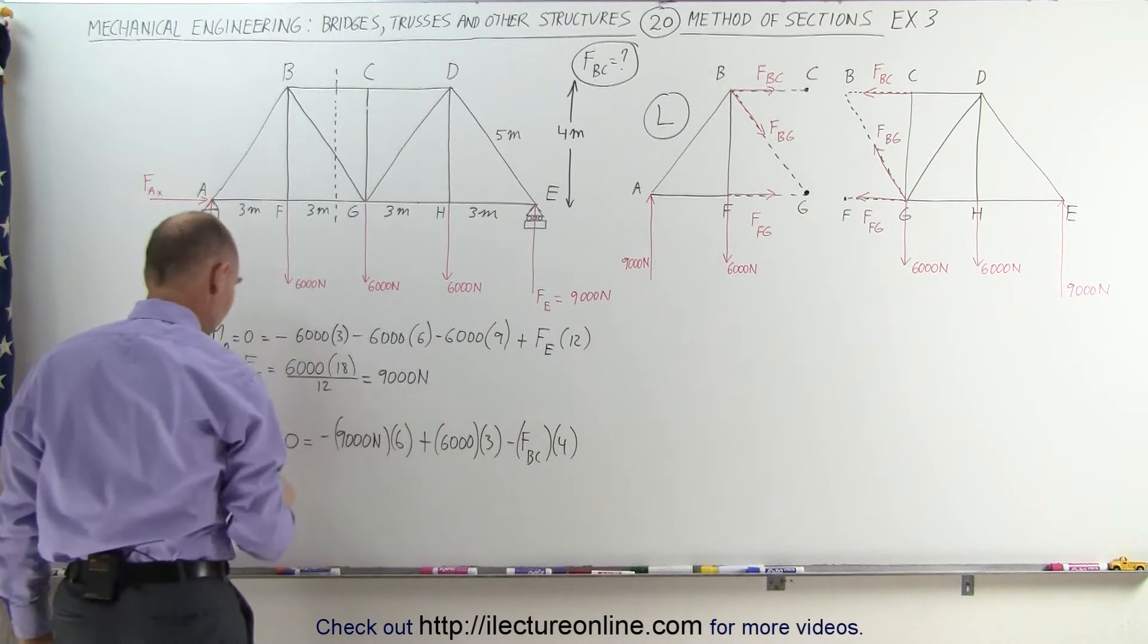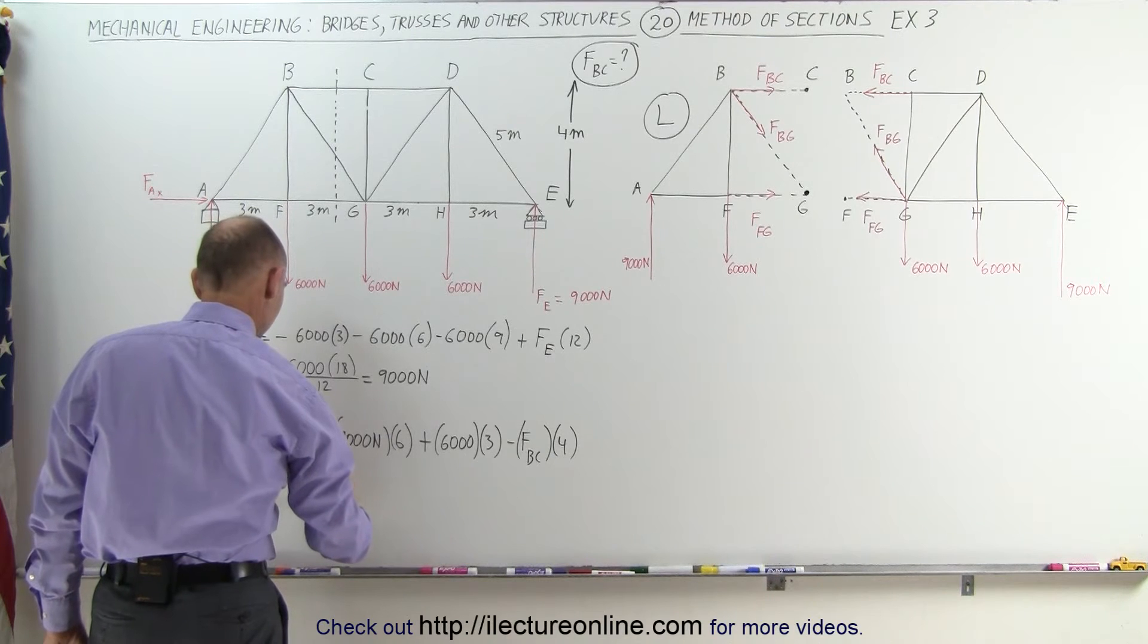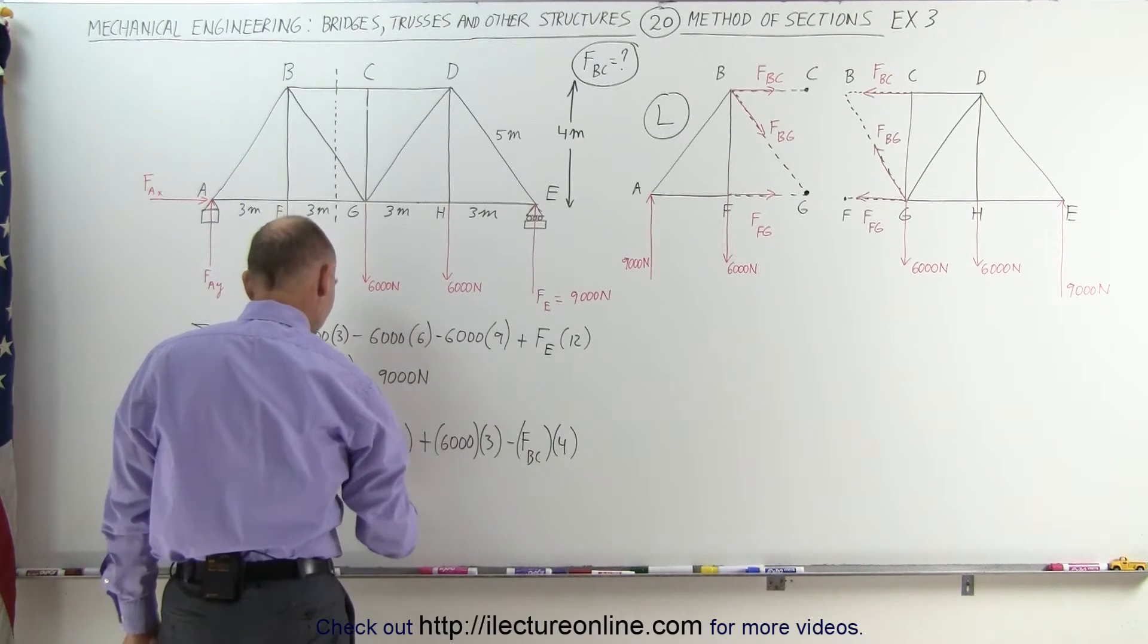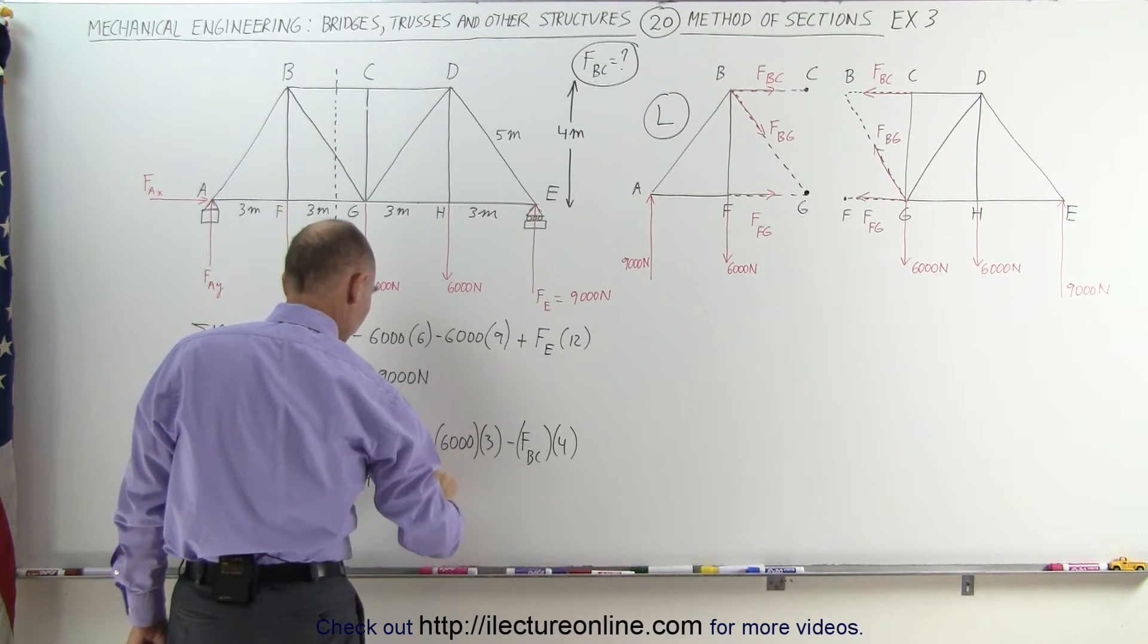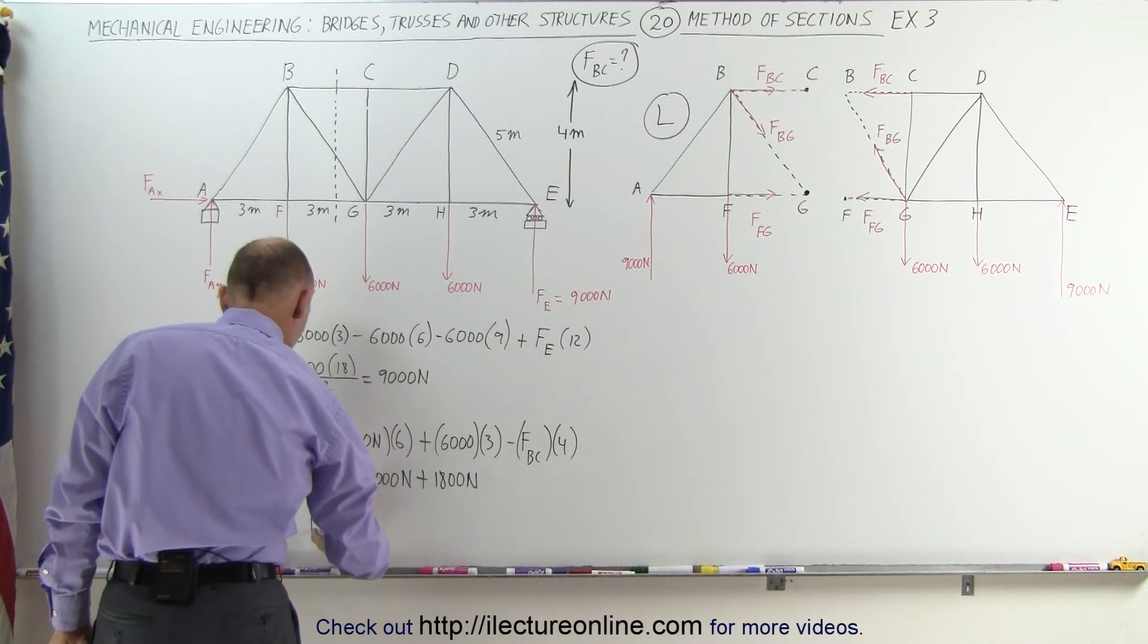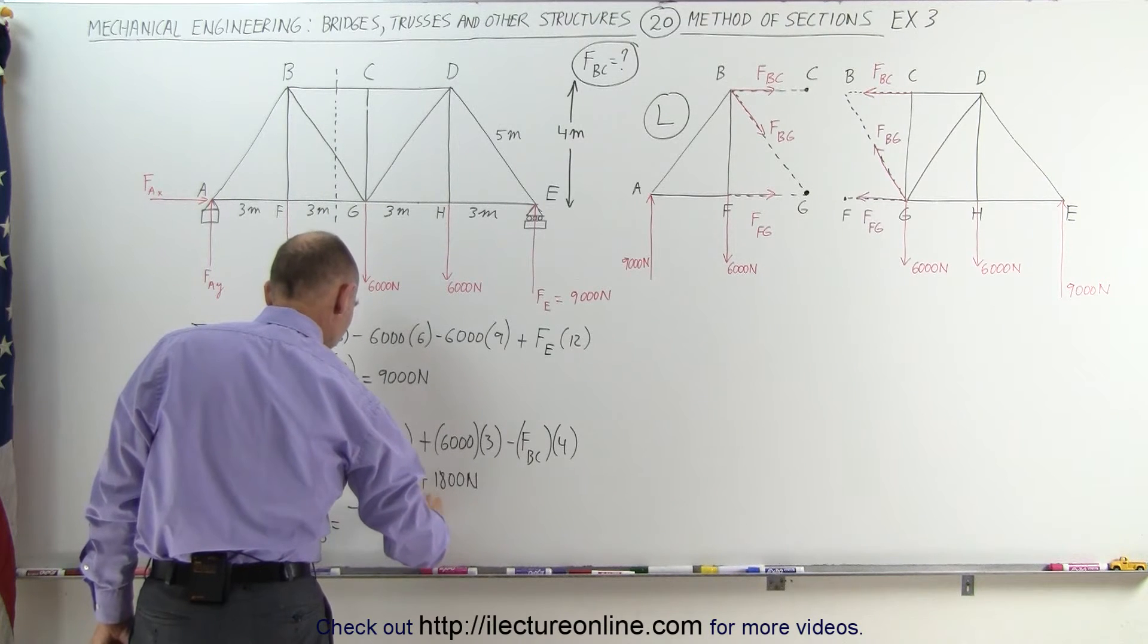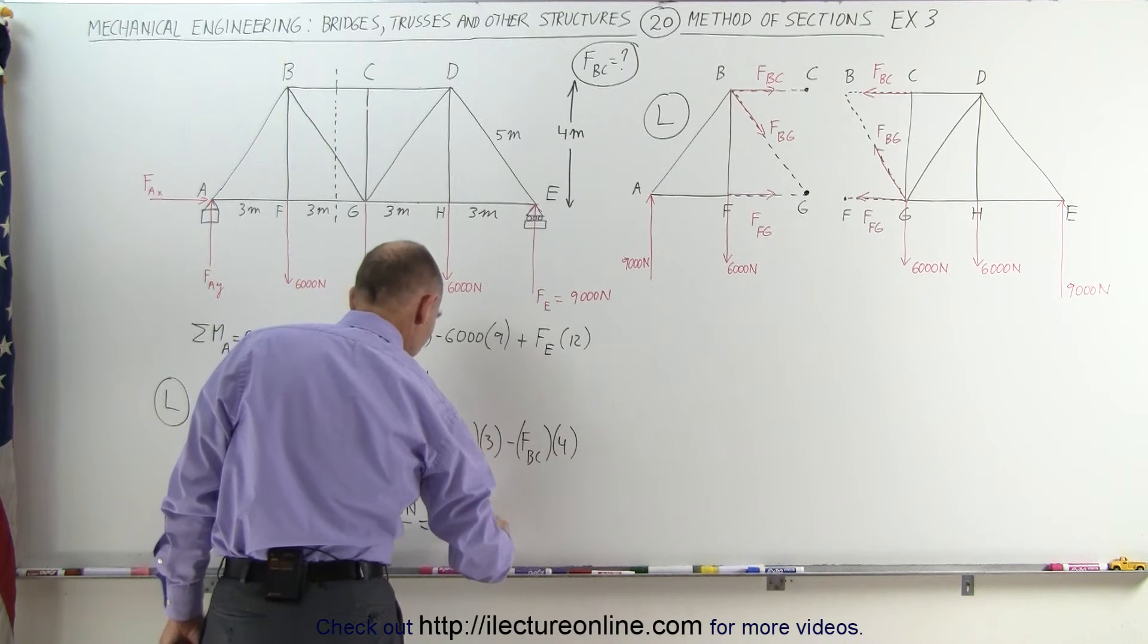Moving this to the other side, we'll get 4FBC is equal to minus 6 times 9,000, that's minus 54,000, plus 18,000, which means that FBC is equal to minus 36,000 Newtons divided by 4, which is equal to minus 9,000 Newtons.